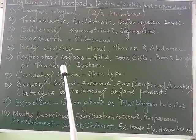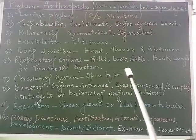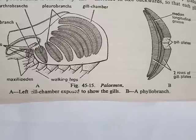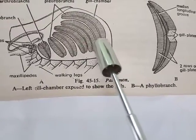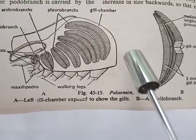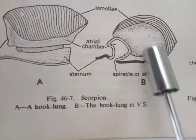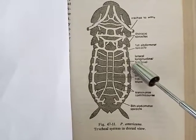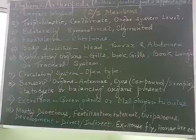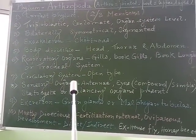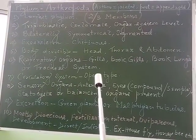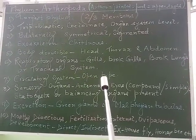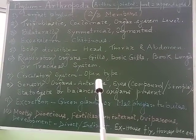Respiration takes place with the help of gills, book gills, book lungs, or a tracheal system. For example, gills are found in prawns (Palaemon), scorpions have book lungs, and cockroaches have a tracheal system for respiration. Regarding the circulatory system, they have an open type — blood flows through the body cavity (haemocoel), not through closed tube-like networks as in a closed blood vascular system.